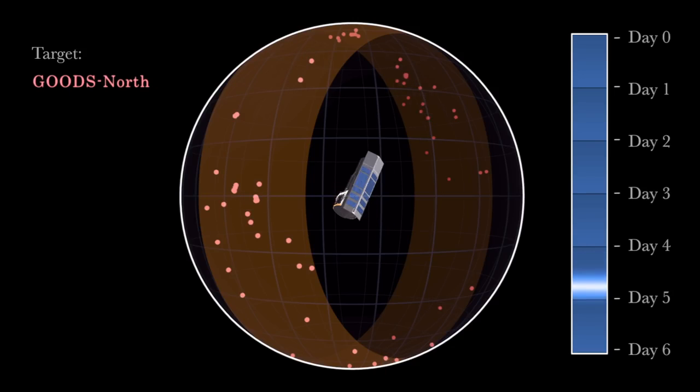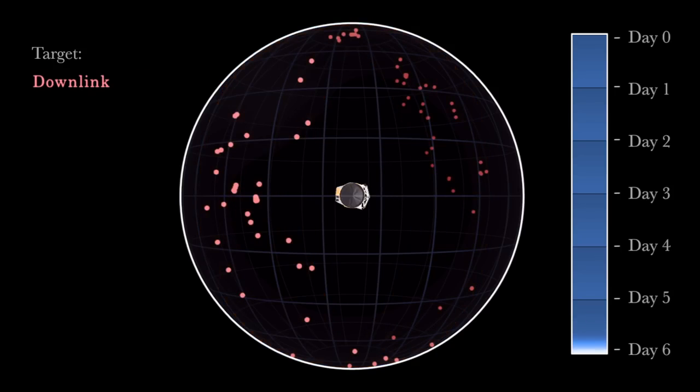Its only real limits are how much data it can store and how long it takes to transmit that data to Earth. During this run, Spitzer had been downlinking data and getting new instructions about once a day. But over 90% of its time is devoted to efficiently studying the universe.